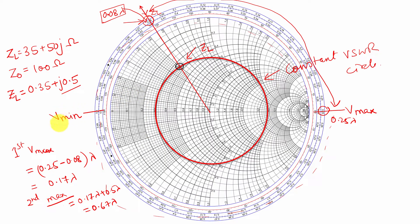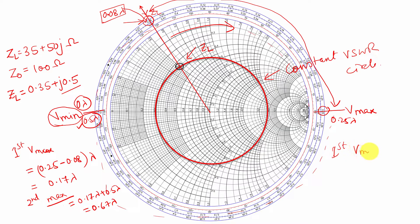Similarly, for voltage minima, we have to find the distance from the load in the clockwise direction to the voltage minima. This point is at 0.5 lambda. We take the higher value to subtract from it. So the distance of the first voltage minima will be 0.5 minus 0.08 lambda, which equals 0.42 lambda. The second minima will be 0.5 lambda more than this — keep adding 0.5 lambda to get the next minima.